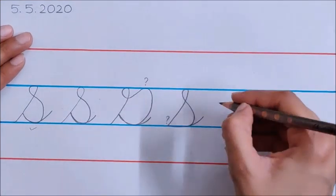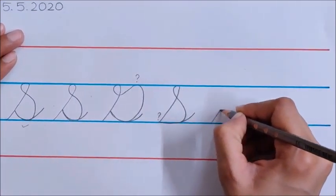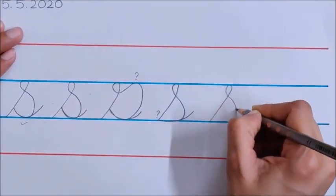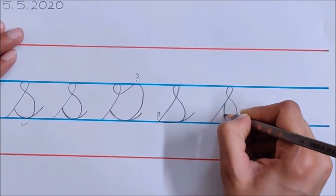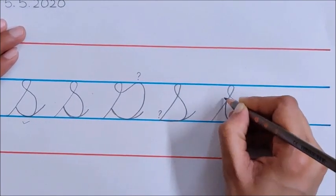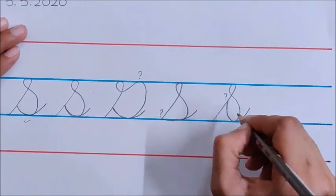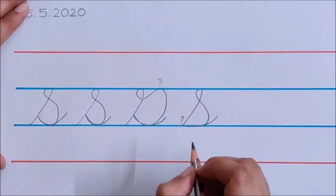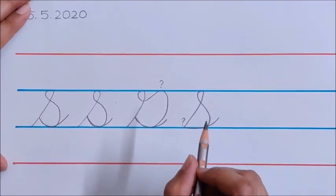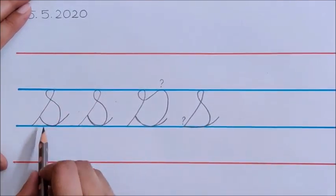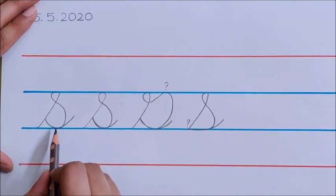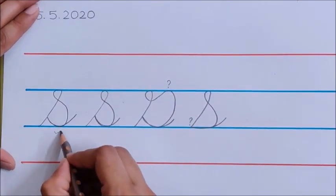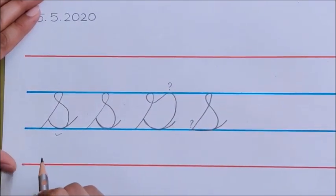And also don't write S like this. Don't take this line till here. This is also wrong. The line should come only till here. Ok children. The correct way of writing letter S is this. Ok children. Letter S. The sound is S.